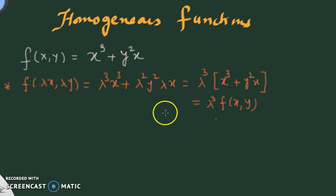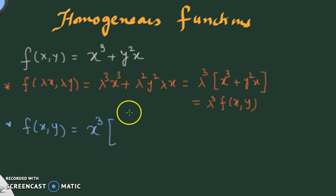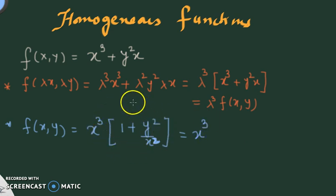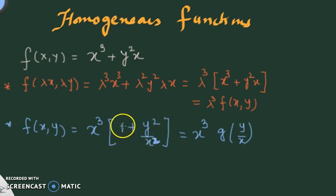Another approach: if I take x³ common (since degree is 3), I get x³ multiplied by a new function. When x³ is factored out, the remaining terms become y²/x², which can be seen as (y/x)². The constant term is (y/x)⁰. So I can write f(x,y) = x³·g(y/x). That is the second way.